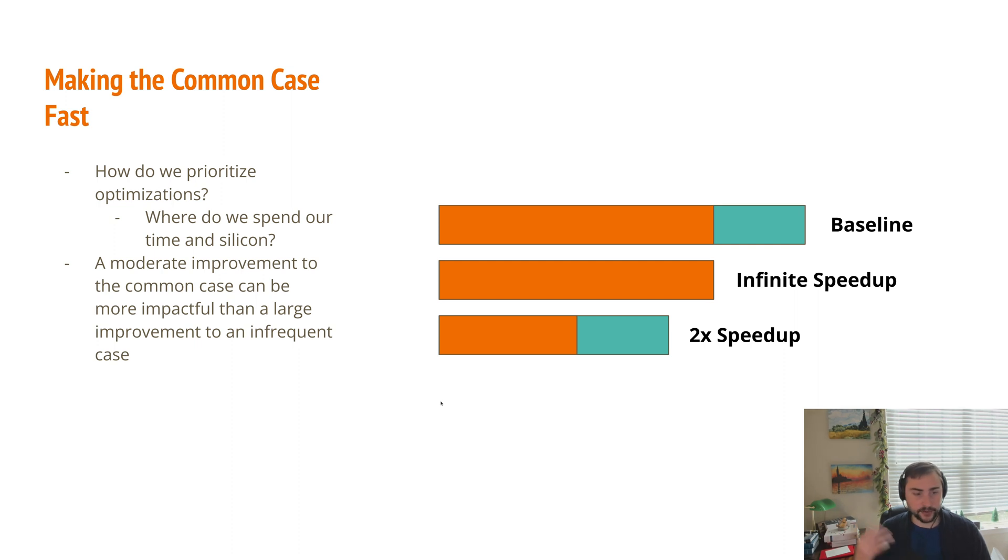Now, there's always caveats that are going to be here in terms of making the common case fast. For example, this is also heavily dependent on how easy it is to get this 2x speedup versus this infinite speedup. If getting this 2x speedup is incredibly difficult, but getting this infinite speedup is very easy, then it's probably going to be worth it to get this teal speedup.